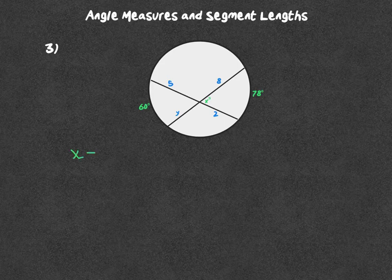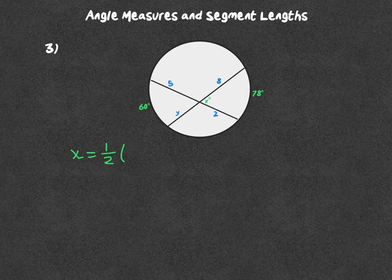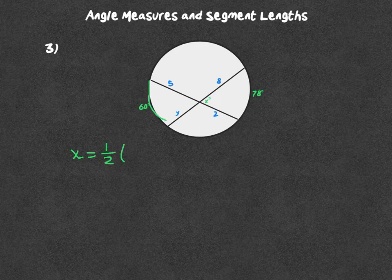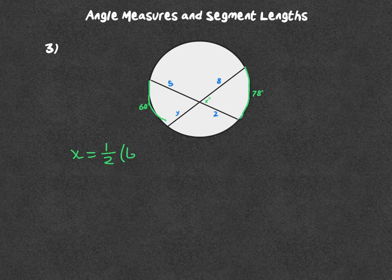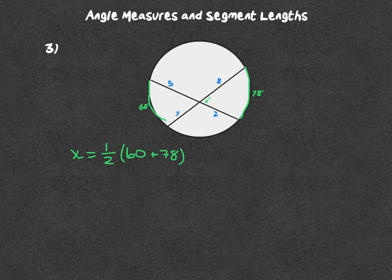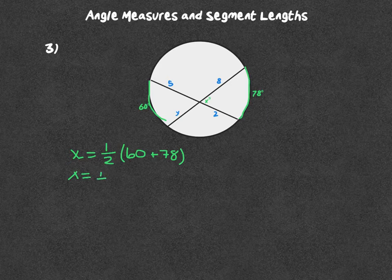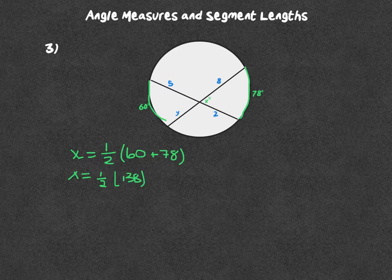The angle equals one half of the sum of the intercepted arcs, which is the 60 and the 78, and then we're going to solve. So X equals one half of 60 plus 78, which is 138. Cut that in half, X equals 69 degrees.